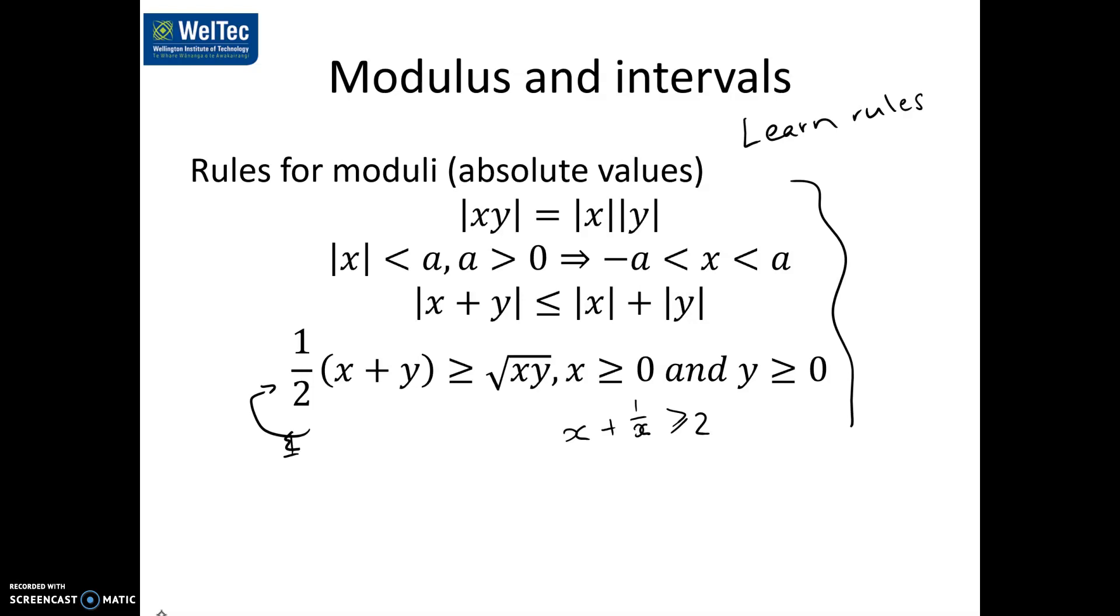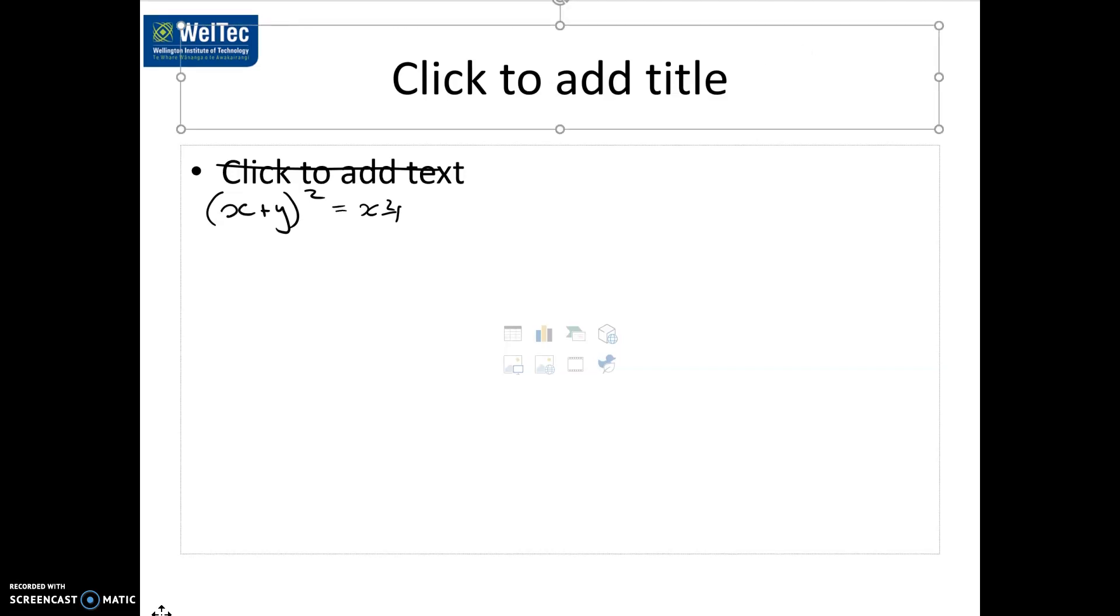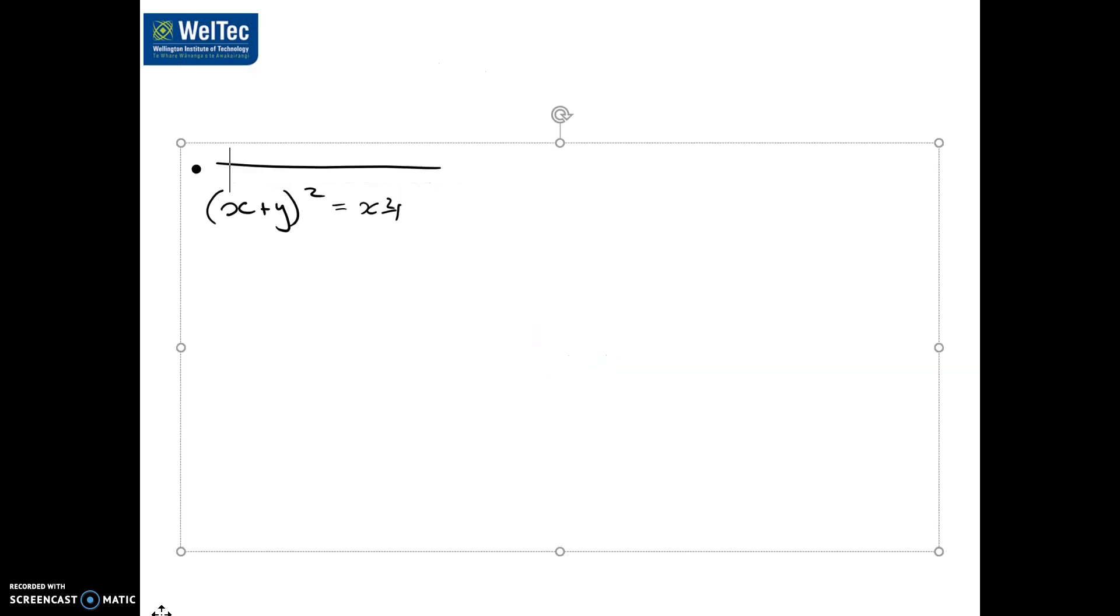To prove the first one, what we're going to do is we're going to start with a rectangle. You don't have to know this proof. It's just something that sometimes makes things a little bit clearer. We've got here x plus y squared. We know that it's equal to x squared plus y squared plus 2xy. Call that number 1. Now, what I'm going to do is I'm going to draw x plus y as a rectangle.